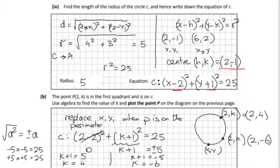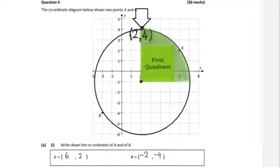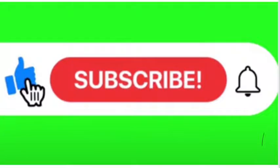Going back to the question — since P is in the first quadrant, the answer is the point (2, 4). That's very straightforward. Thank you for joining Maths Plus — please like and subscribe to the channel.